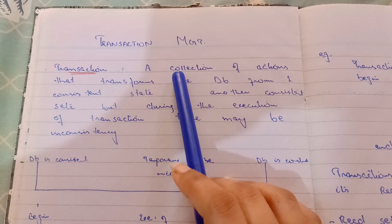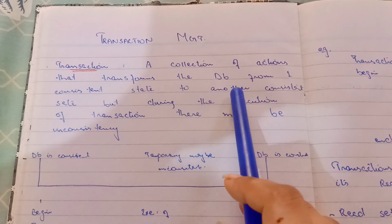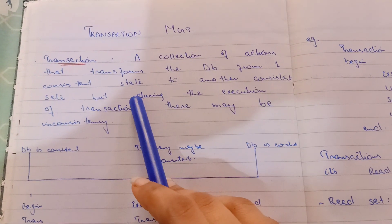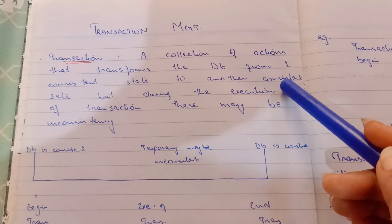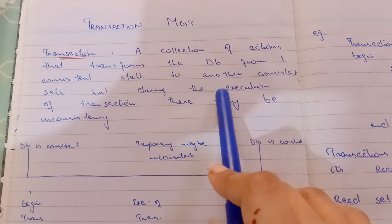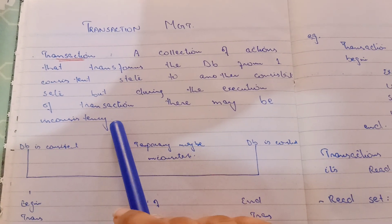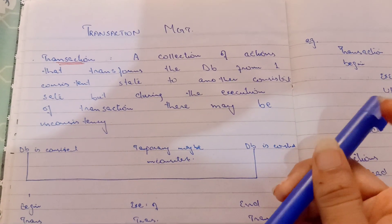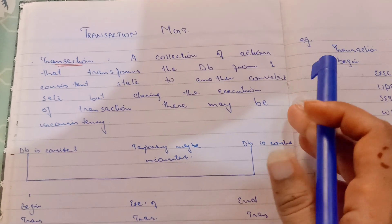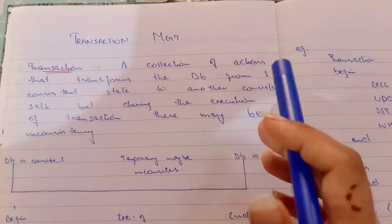A transaction is a collection of actions that transforms the database from one consistent state to another consistent state. But during the execution of the transaction there may be inconsistency. Basically, a transaction is a collection of actions — actions that transform your database into a particular consistent state.